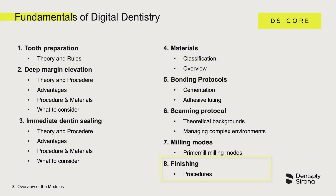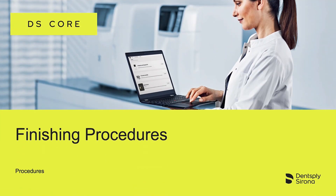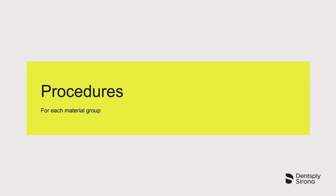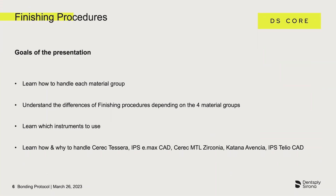Welcome to the Finishing Procedures module. The objectives of this presentation are to learn how to handle and finish each material group in general. It is important to know the differences in the manufacturing and machining process in each material group. You will learn which instruments and tools may be used to machine each individual material group. Following the overview of the four material groups in general, we will go into detail about the materials.